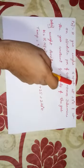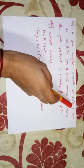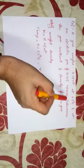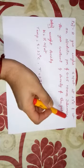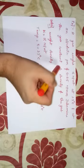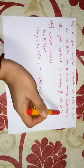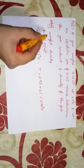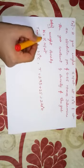A gas weighs 16 newton per meter square at 25 degree Celsius and at an absolute pressure of 0.25 newton per millimeter square. Determine the gas constant and density of the gas. This is given: weight density w